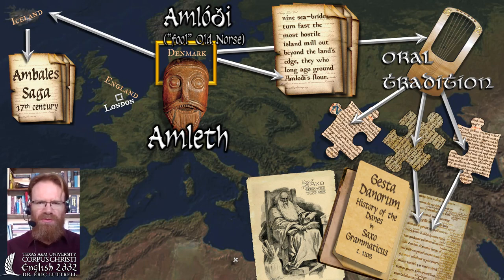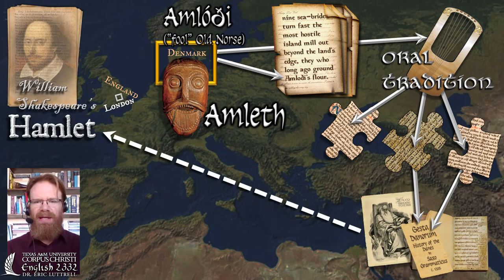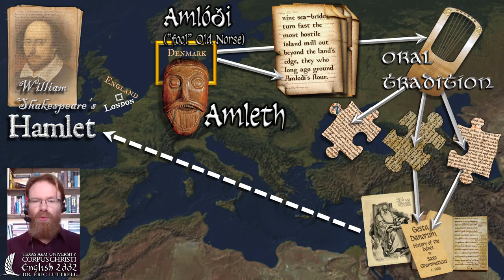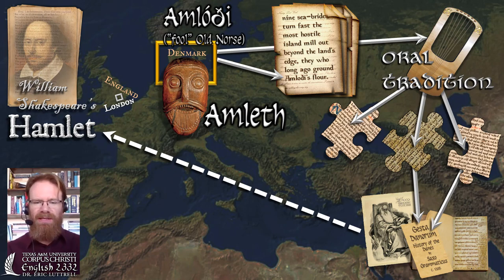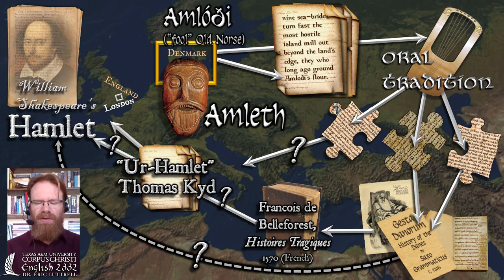There are many other versions of this story before Saxo's account, and many other versions after it. It's probably Saxo's account that ended up influencing Shakespeare, because his History of the Danes was written in Latin — something that could be read all over Europe. But that's not to say it directly influenced Shakespeare, or that Shakespeare himself actually read Saxo's account. There are other intervening versions of the story of Amleth.